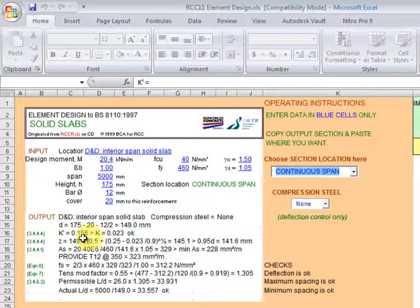To the bottom right under the blue colored cells we have the output. The effective depth, the lever arm Z, the area required and provided as well as the flexion check are all contained in the output.